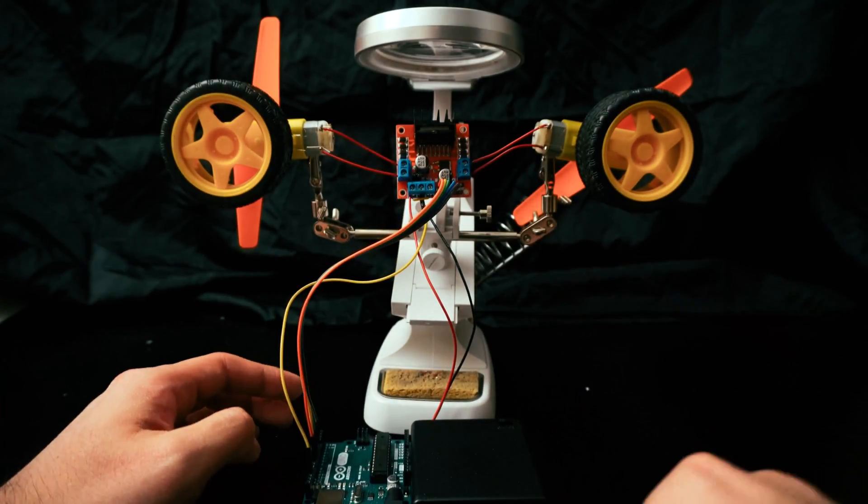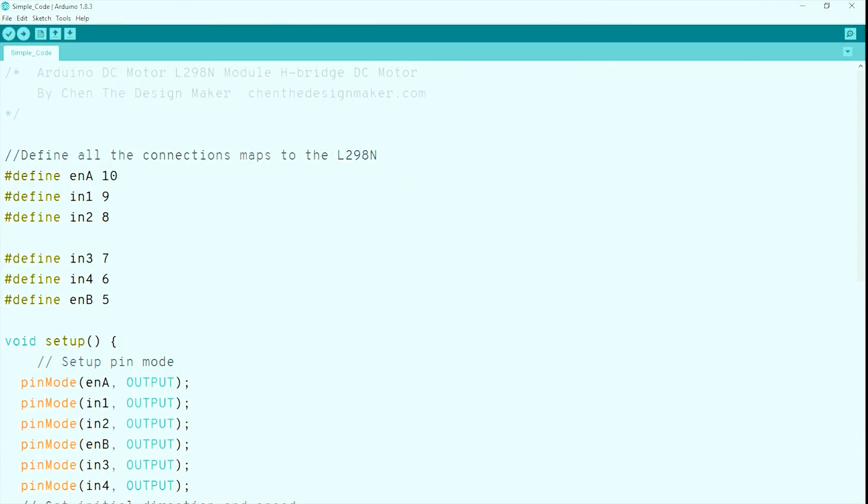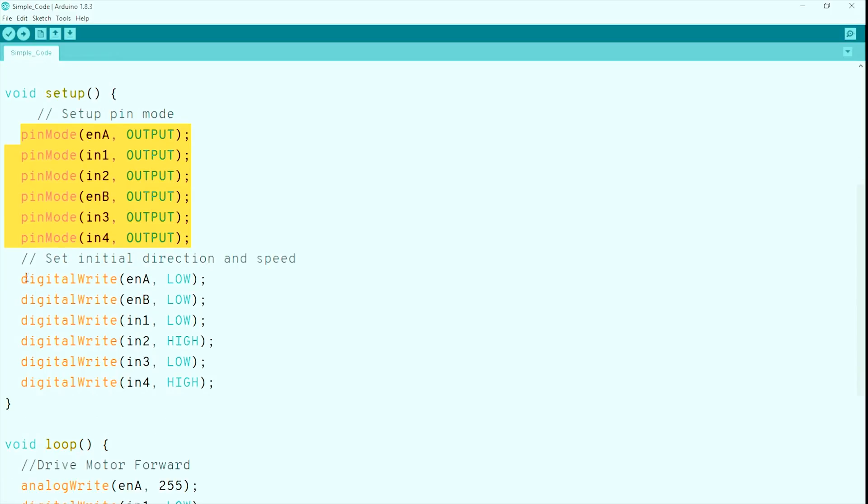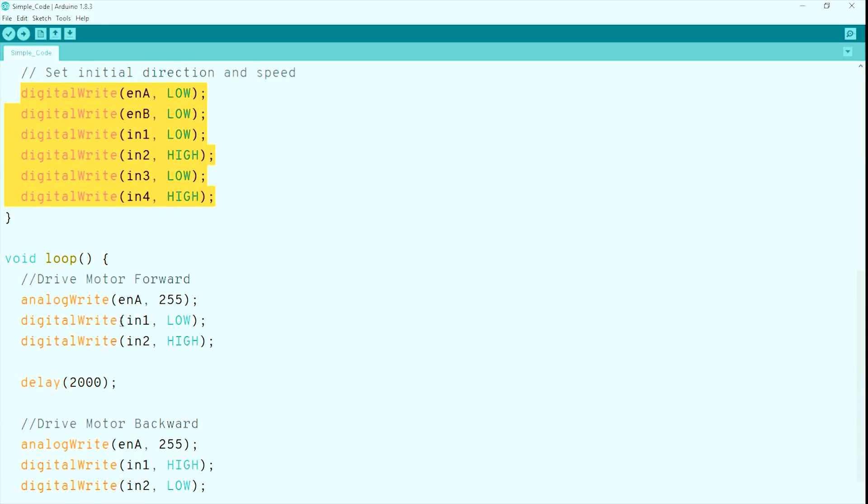Let's start the Arduino programming. Starting from the most straightforward code. The first step is to define all the pin numbers. During the startup, we define all the pins to output modes, then assign them default values, so they stay stopped.